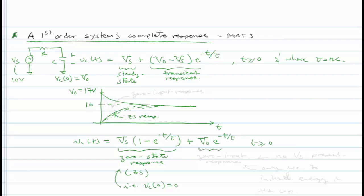And the second term is called the zero input response. And the reason for that is you notice there is no input term here. There is no VS. No VS present. This term is due only to initial energy...